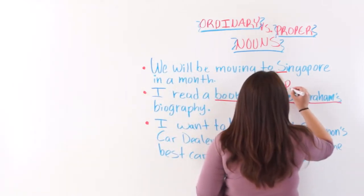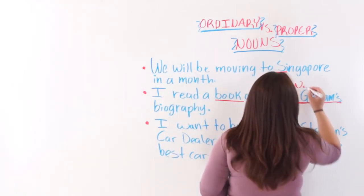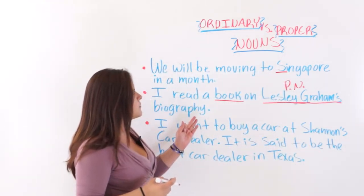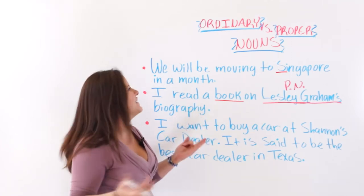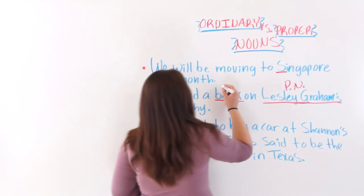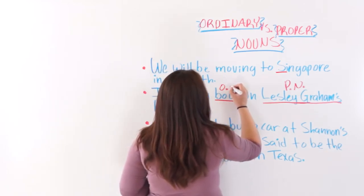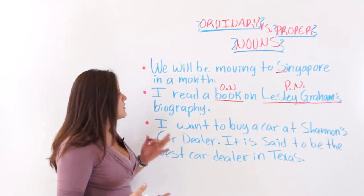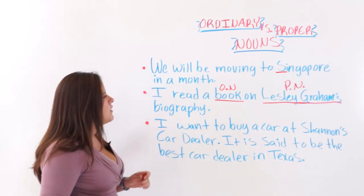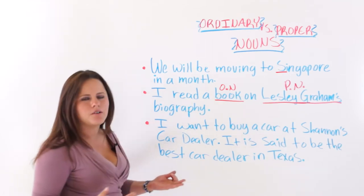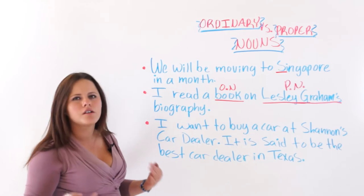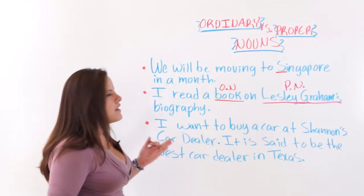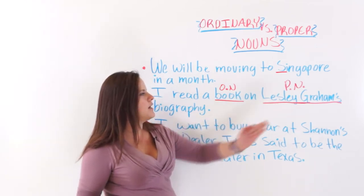Why is 'Leslie Graham' a proper noun? Because it is a specific person. 'Book' is an ordinary or common noun because it's a general thing. 'Leslie Graham' is a proper noun because it's a specific, particular person. That is why we capitalize 'Leslie Graham's.'